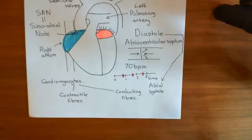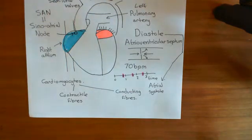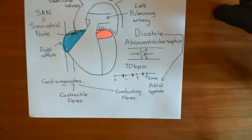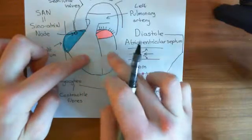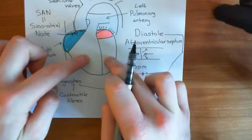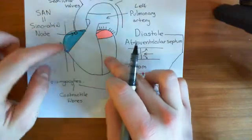Atrial systole means the contraction of the atria. The blood has now been squeezed out of the atria and into the ventricles — you've got a lot of blood now in the right ventricle and the left ventricle.